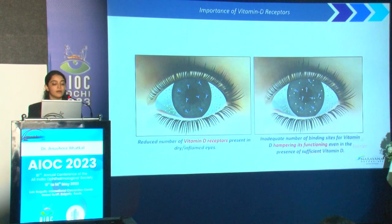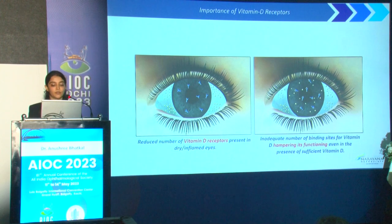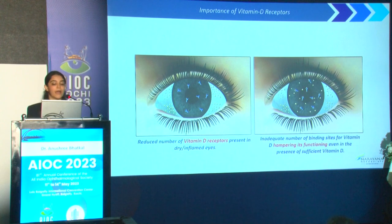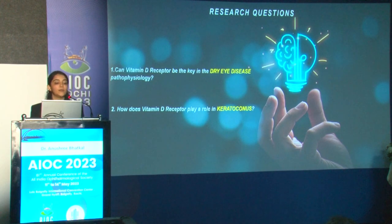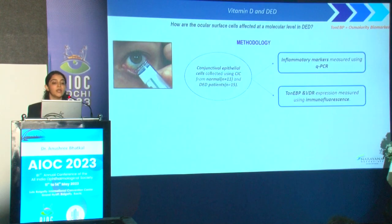We can say that if vitamin D receptors are reduced in number on the ocular surface, they would provide an inadequate number of binding sites for vitamin D, which could hamper its function. This brings us to our research question: can the vitamin D receptor be the key in dry eye disease pathophysiology?